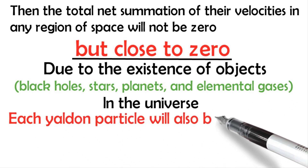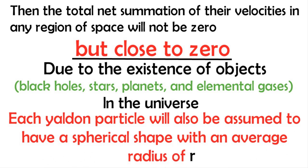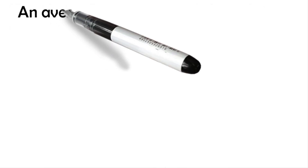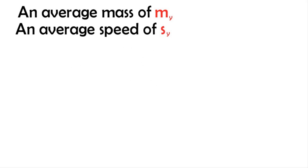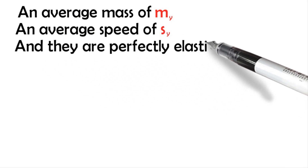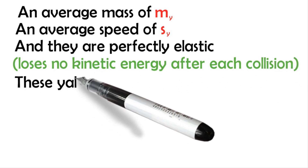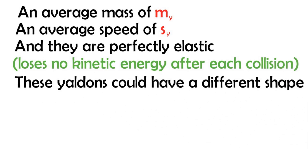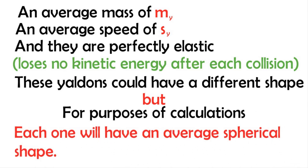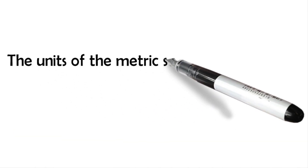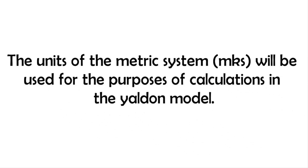Each Yaldon particle will also be assumed to have a spherical shape with an average radius, an average mass, an average speed, and they are perfectly elastic — losing no kinetic energy after each collision. These Yaldons could have a different shape, but for purposes of calculations, each one will have an average spherical shape. The units of the metric system will be used for all calculations in the Yaldon model.